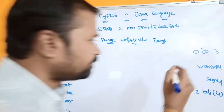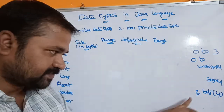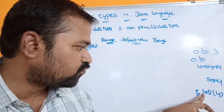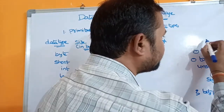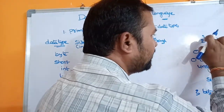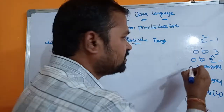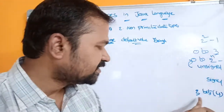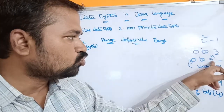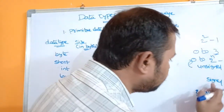So the formula for unsigned data type is: 0 to 2^n - 1, where n represents the number of bits. Here n = 2, so 2 power 2 = 4, and 4 - 1 = 3. So the range is 0 to 3. This is the range of the unsigned data type.